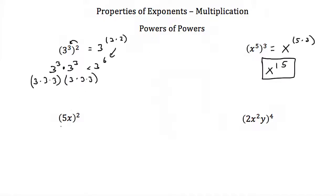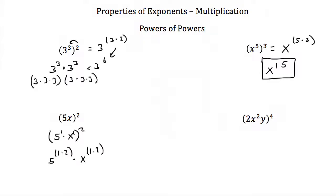Our next example: 5x squared, all to the second power. We have two numbers here, so think of this as 5 to the 1 times x squared. When you take a power to a power, you do that to both terms. So we get 5 to the 1 times 2, multiplied by x to the 1 times 2 — that's 5 squared times x squared. 5 squared is 25, so the answer is 25x squared.